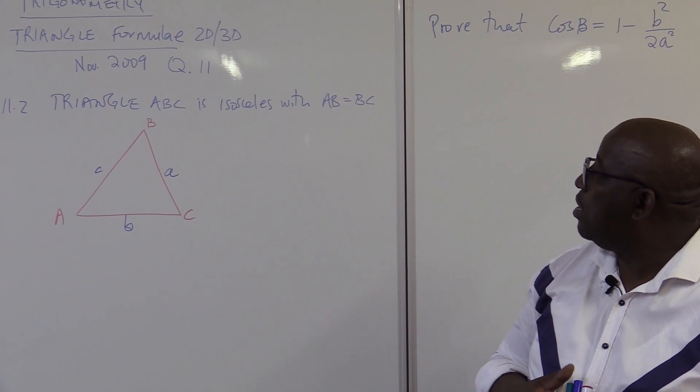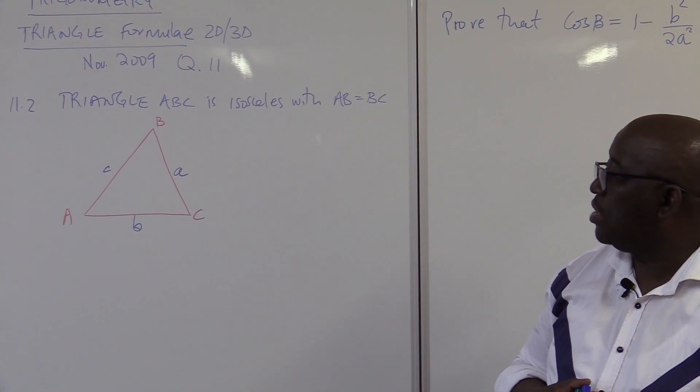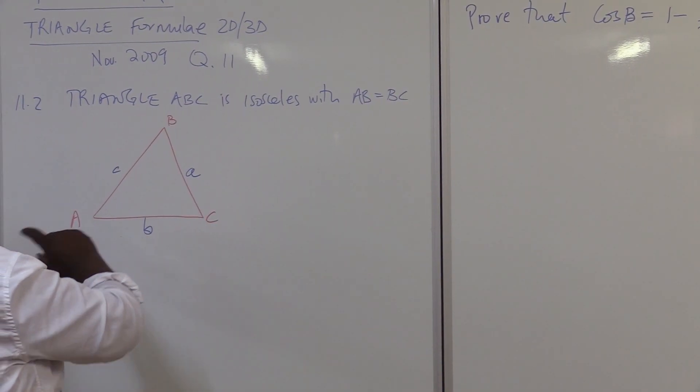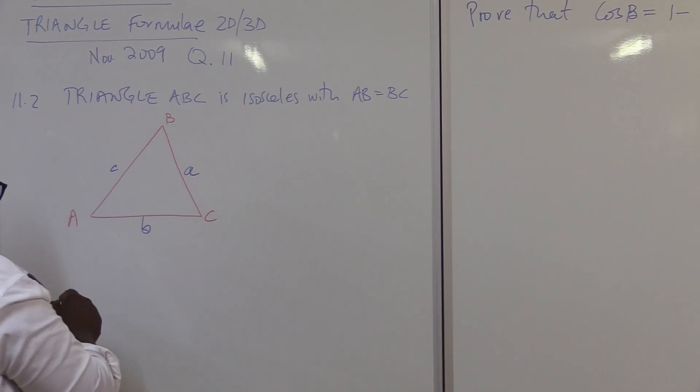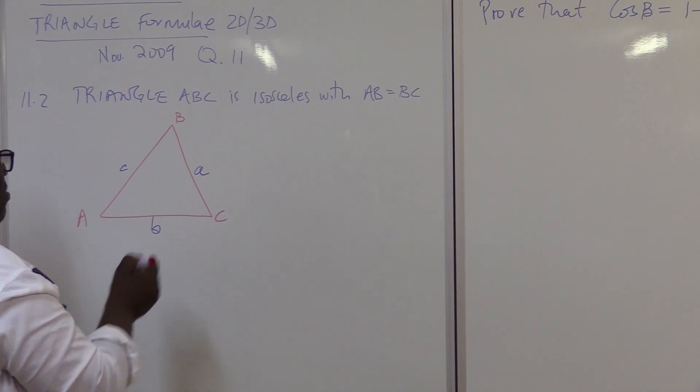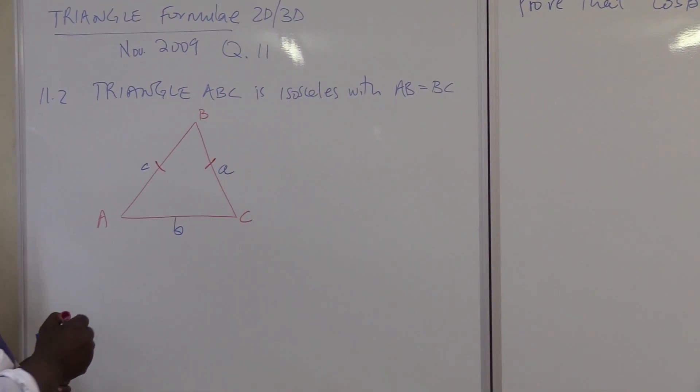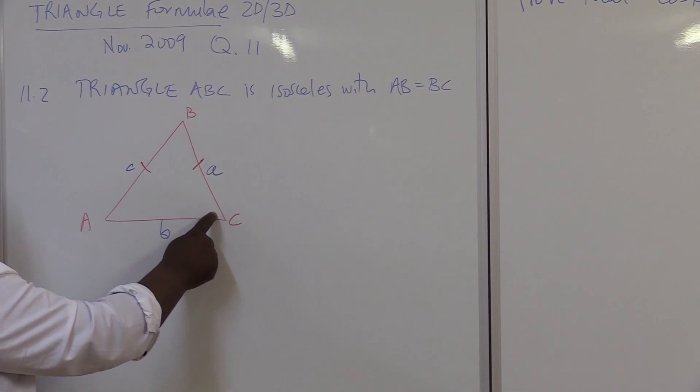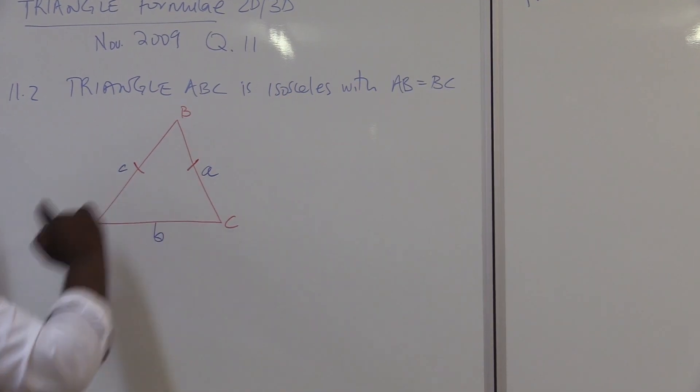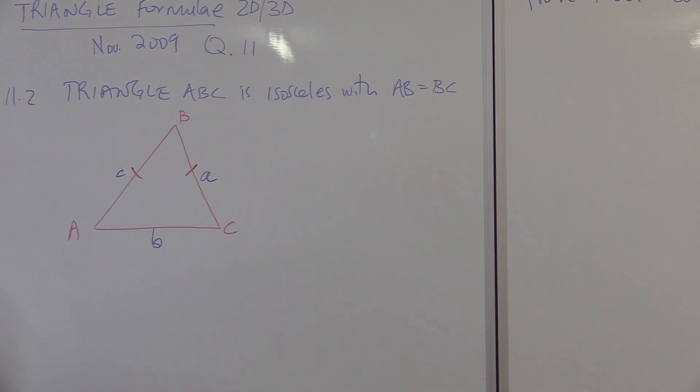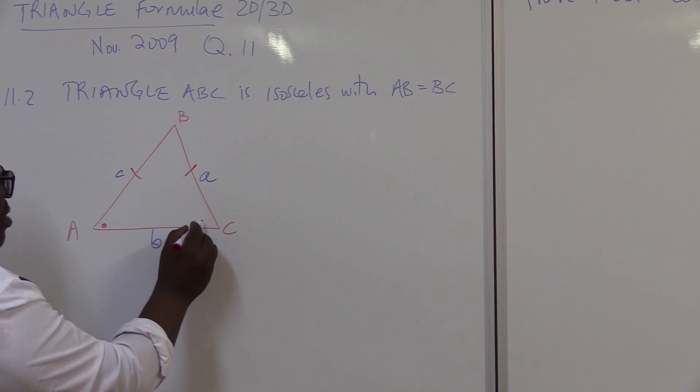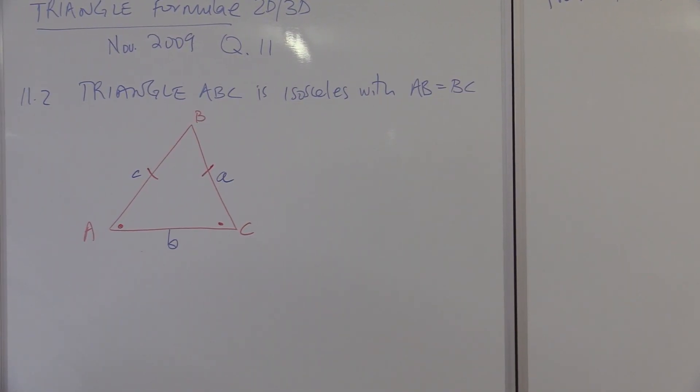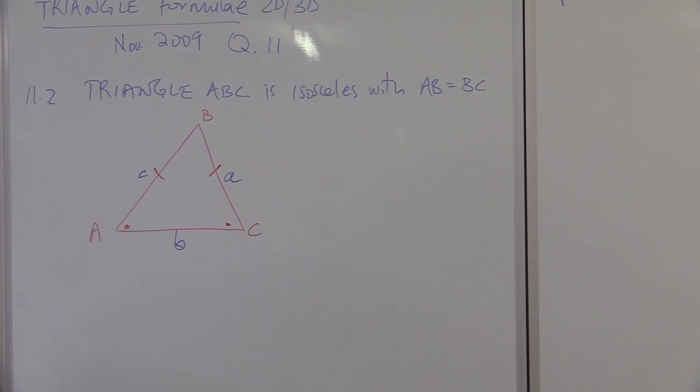We're given triangle ABC. It's isosceles with AB equals to BC. So these two sides are the same. This one is equal to this one. That makes it an isosceles triangle. This angle will then be equal to this angle if these two sides are equal. So I know that this angle is the same as this angle. Angles opposite sides are equal in an isosceles triangle.